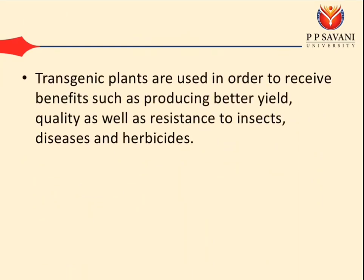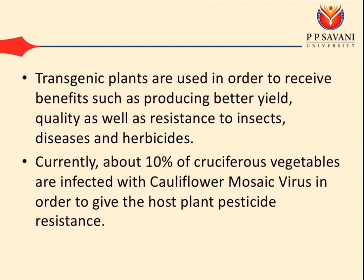Transgenic plants are used in order to receive benefits such as producing better yield and quality, as well as resistance to insect disease and herbicides. Currently, about 10% of cruciferous vegetables are infected with Cauliflower Mosaic Virus in order to give the host plant pesticide resistance.